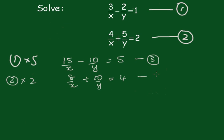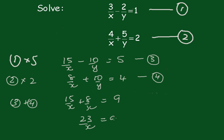Now adding 3 and 4 together, this becomes 15 on x plus 8 on x equals, these go out, so it becomes 23 on x equals 9.